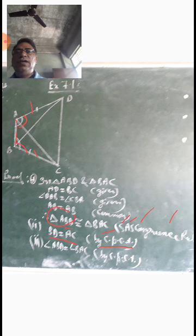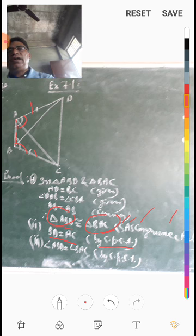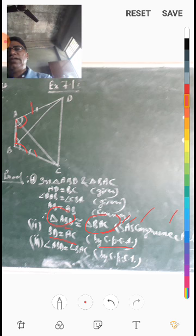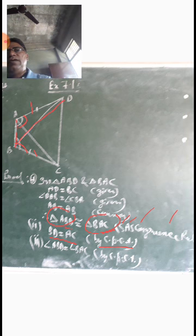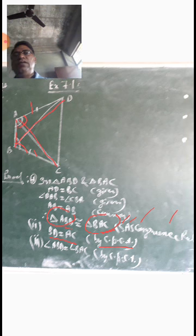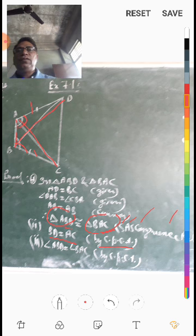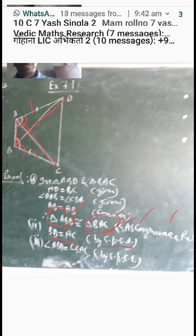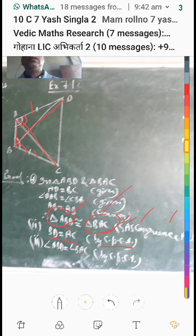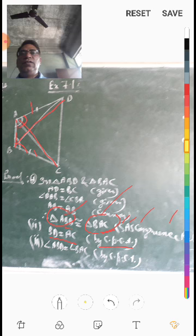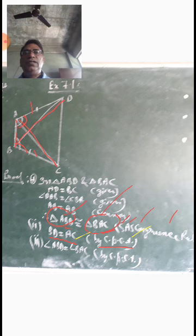Triangle ABD and triangle BAC are the congruent triangles we proved. BD and AC are corresponding parts of these two triangles. Since we have proven the triangles congruent, these corresponding parts BD and AC are equal by CPCT.